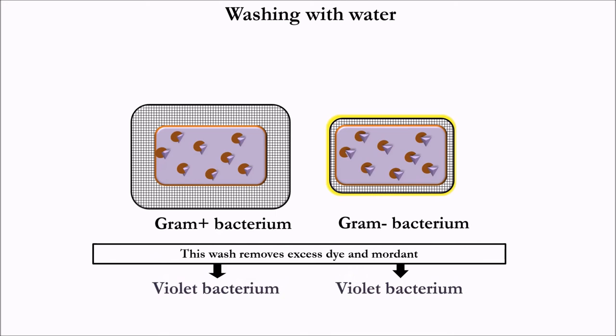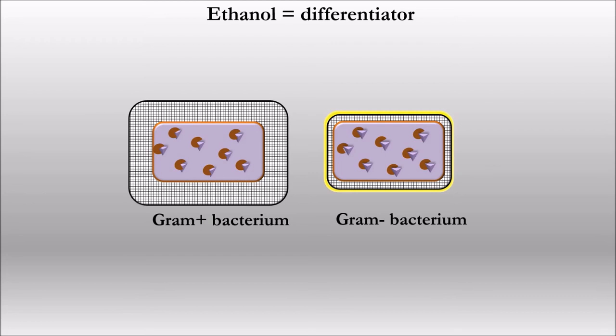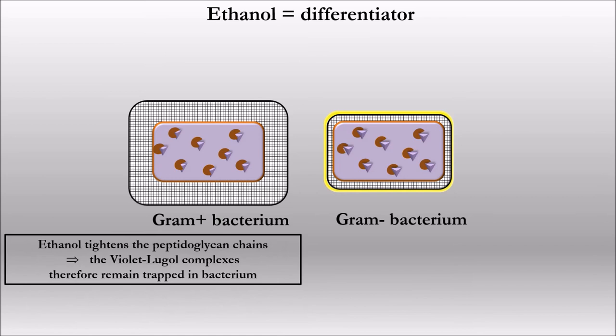In order to differentiate gram positive bacteria from gram negative bacteria, ethanol is applied — this is called a differentiator. In gram positive bacteria, ethanol tightens the peptidoglycan chains, so the violet-lugol complexes remain trapped in the bacteria, which remain purple.